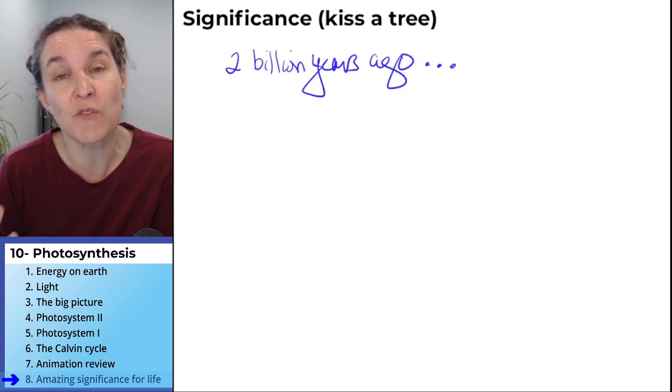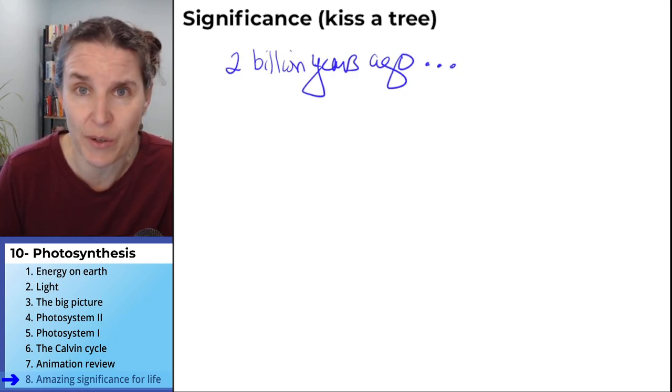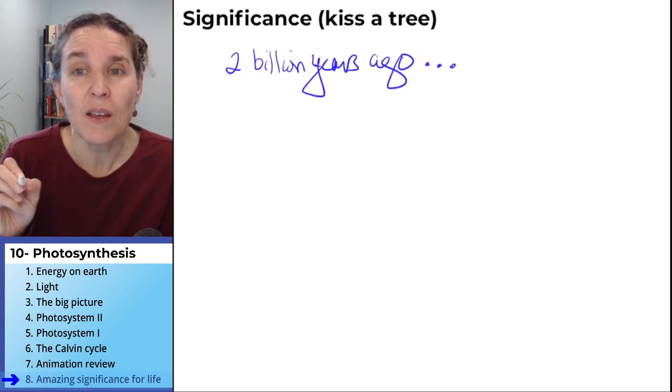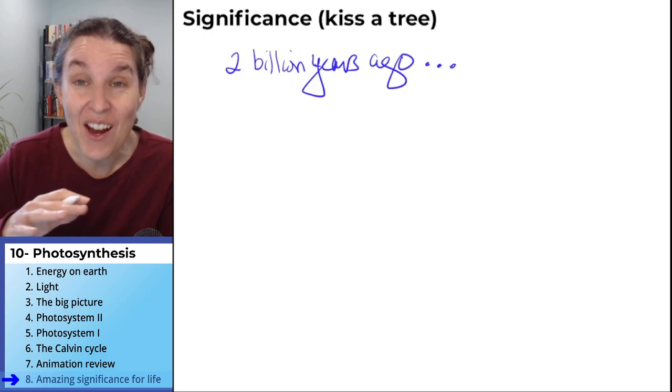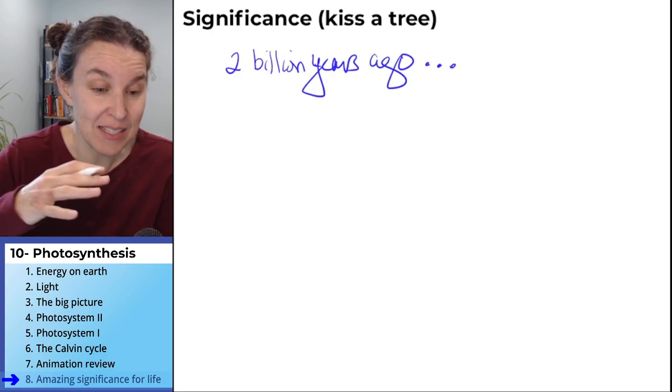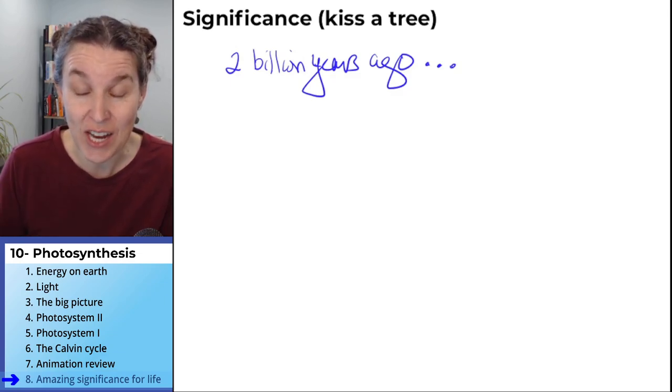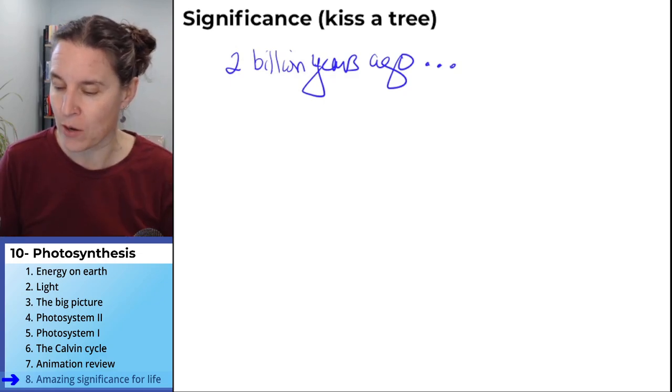But 2 billion years ago is when life figured out photosynthesis. When photosynthesis first evolved in some little single-celled critter, a little prokaryote likely. When that happened, there was this explosion of change. An explosion of biodiversity.